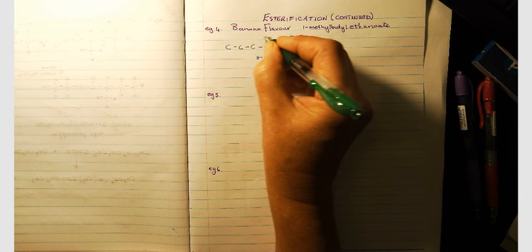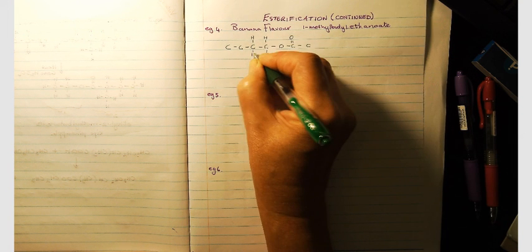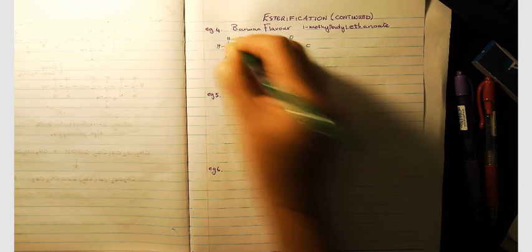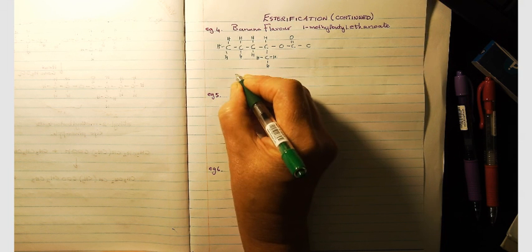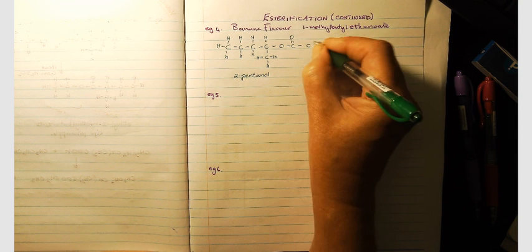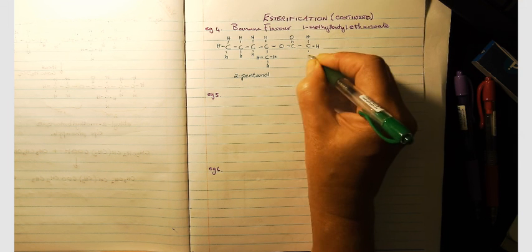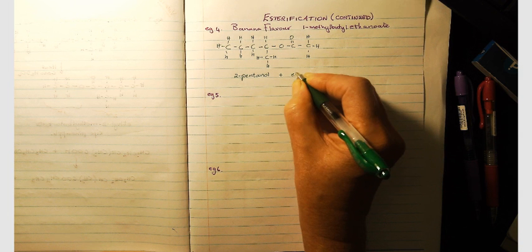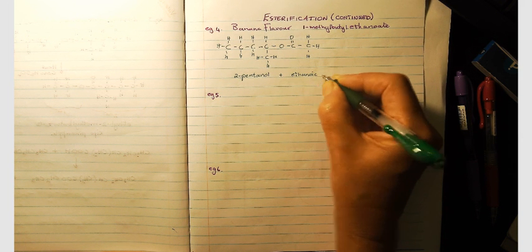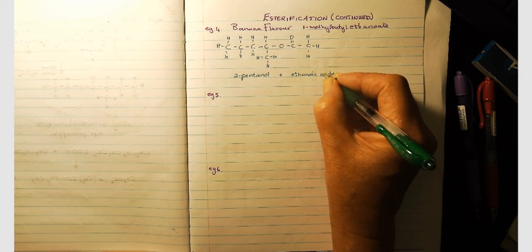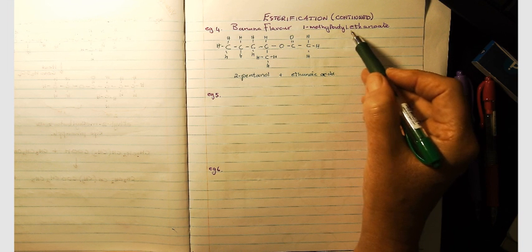The original alcohol was 2-pentanol and obviously the ethanoate was the carboxylic acid. So 2-pentanol and ethanoic acid formed one methyl butyl ethanoate.